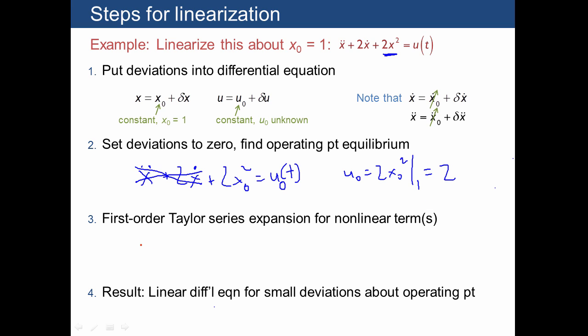Now let's talk about the Taylor series expansion. So here we can just talk about the deviations. And so what we're going to end up with is δẍ plus 2δẋ plus 2x², which if you recall, we already found that 2x² can be expanded as 2 plus 4 times δx. We showed that on the previous slide. So here we have 2 plus 4 times δx, and that's got to be equal to u₀ plus δu. And of course, we already showed that u₀ is equal to 2.